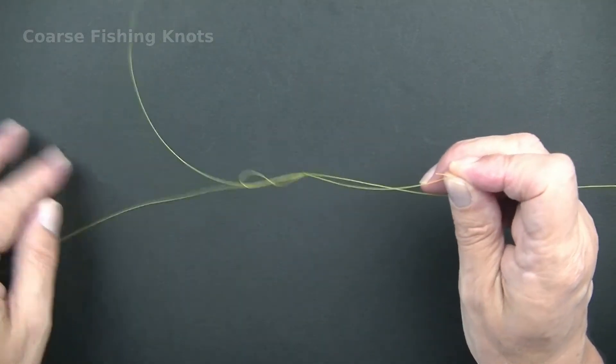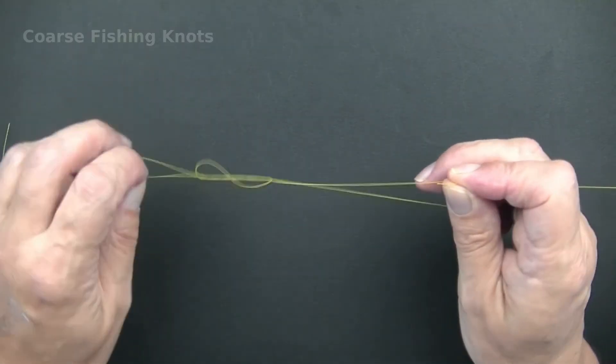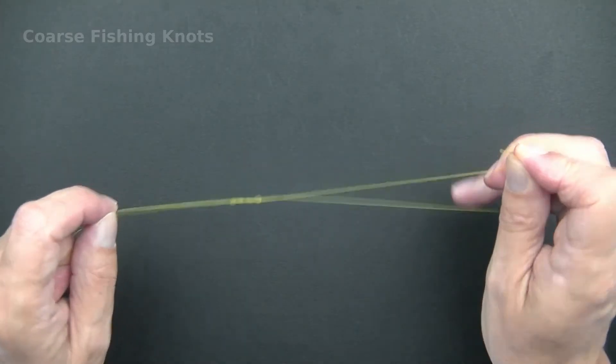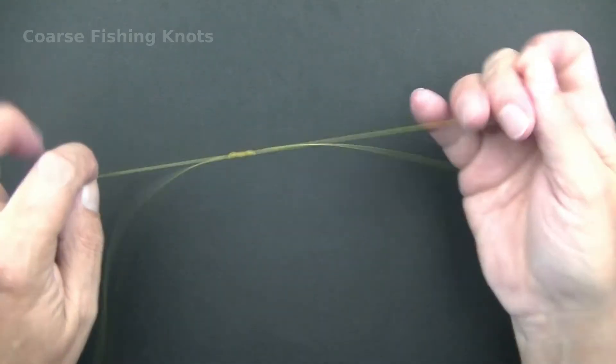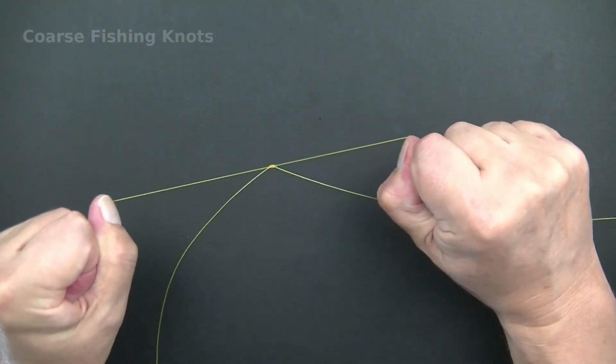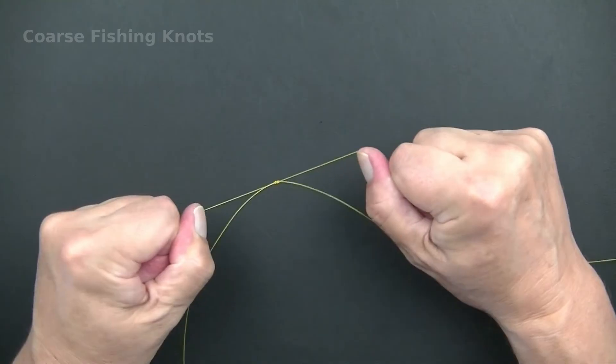Pull the two ends to form the knot. Wet the knot with water or saliva to lubricate the line. Pull the knot down tight onto the main line.